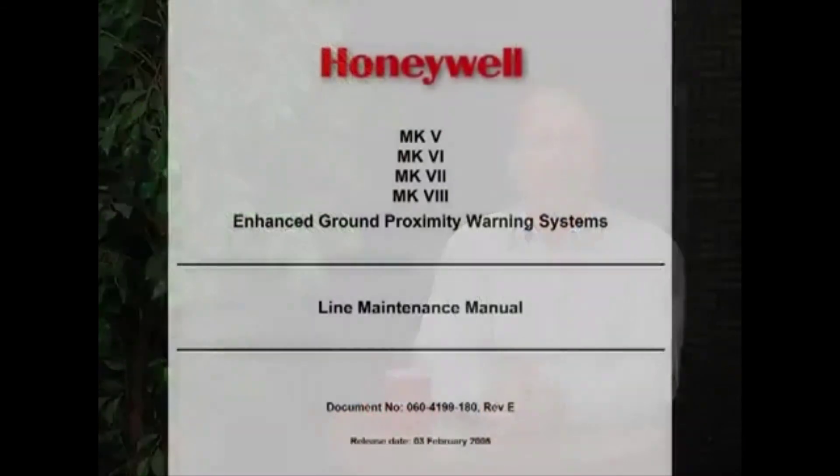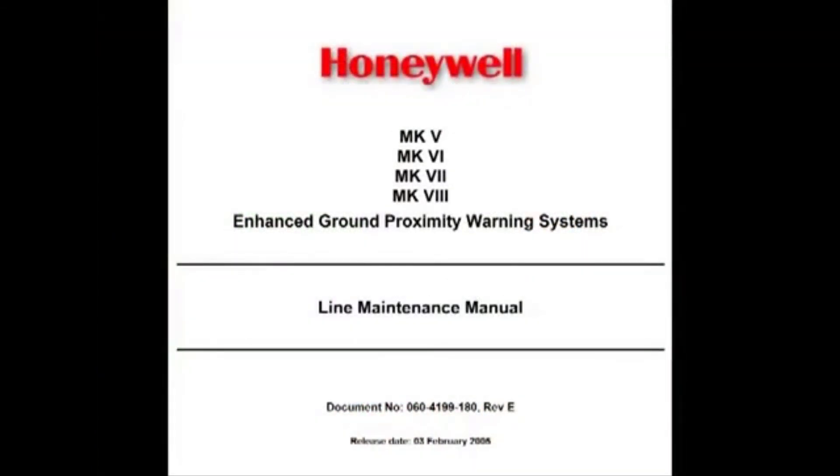If a discrete input changes state, eGPWS enunciates the name of the discrete and its new state. For example, Glide Slope Cancelled. The Line Maintenance Manual has a complete list of input discretes.